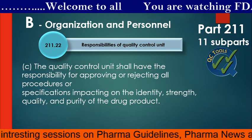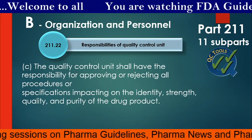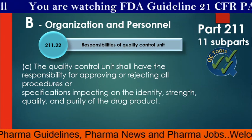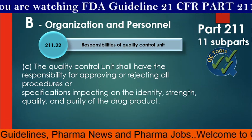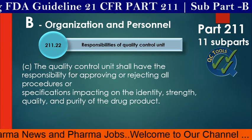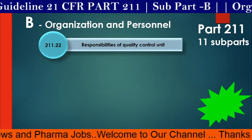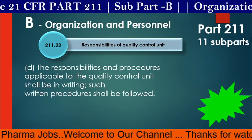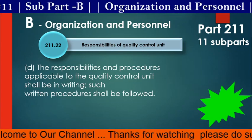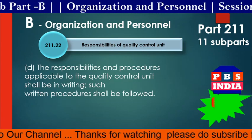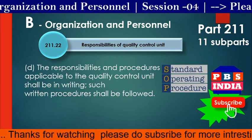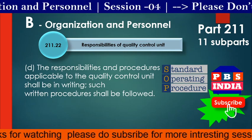The Quality Control Unit shall also have the responsibility for approving or rejecting all procedures or specifications impacting on the identity, strength, quality and purity of the drug product. The responsibilities and procedures applicable to the Quality Control Unit shall be in writing, and such written procedures shall be followed — like SOPs, Standard Operating Procedures, Standard Testing Procedures, and so on.